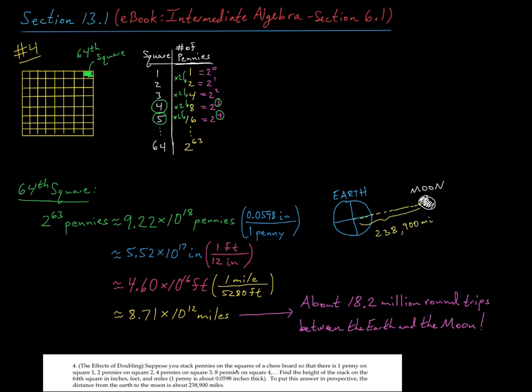So in just 64 steps, we're now into something ridiculously large, right? I mean, the distance from the earth to the moon is 238,900 miles. So if you take our height here, our penny stack on the 64 square, it's about 18.2 million round trips, so back and forth, between the earth and the moon, right? So it just doesn't really make a lot of intuitive sense, but that's the power of doubling. All right, cool.